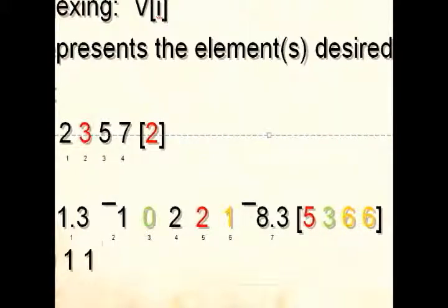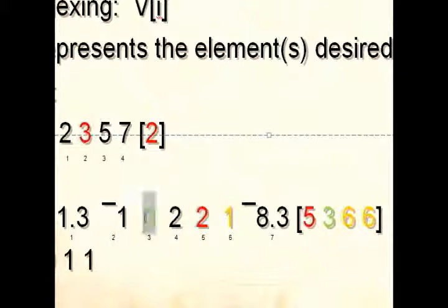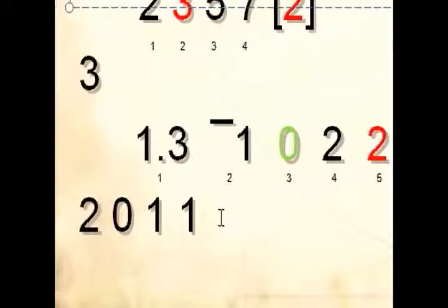this will pick the fifth one, which is a 2; the third one, which is a 0; the sixth one, which is a 1; and the sixth one again, which is a 1. So we'll end up with 2, 0, 1, 1.